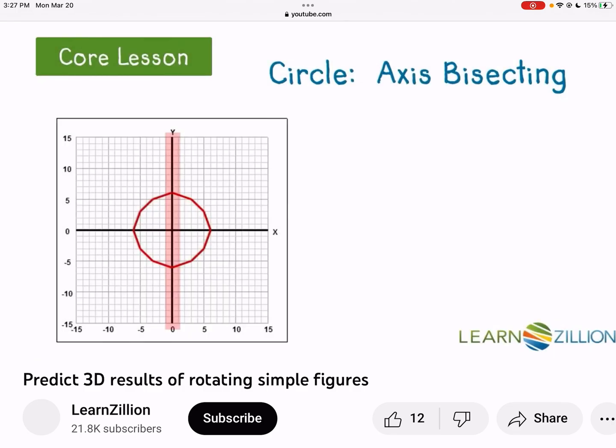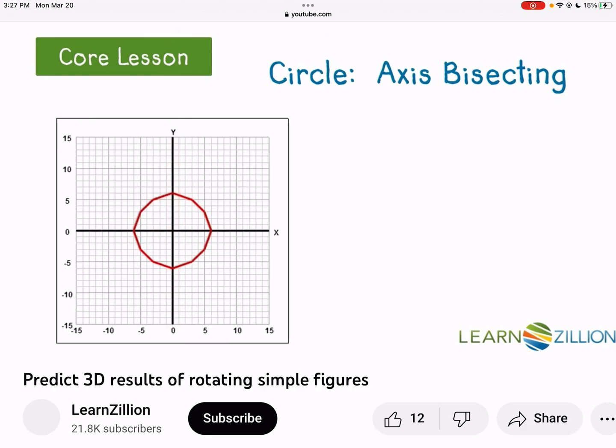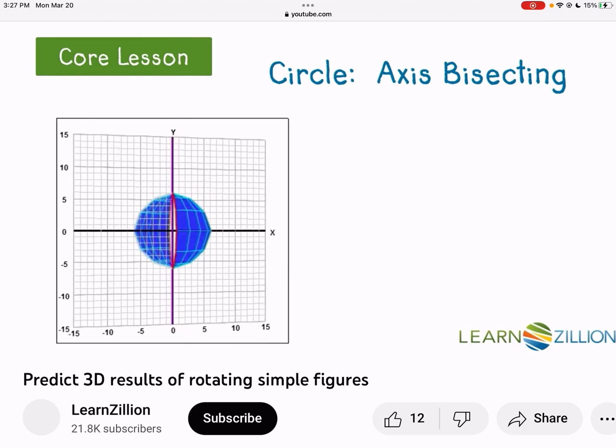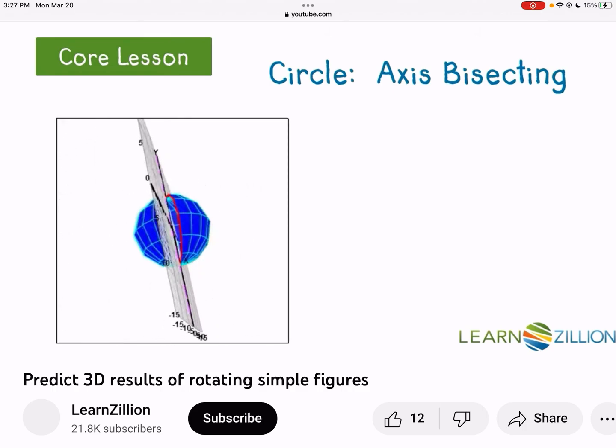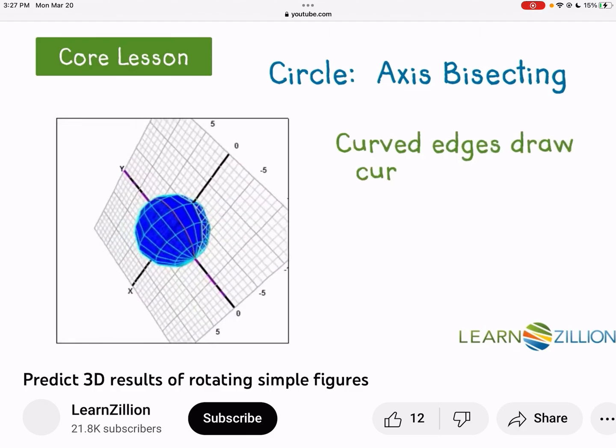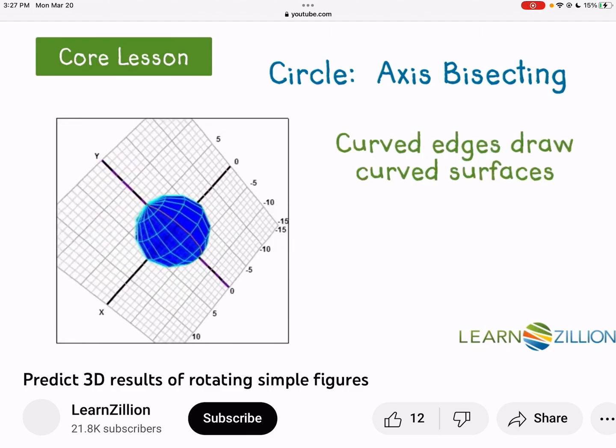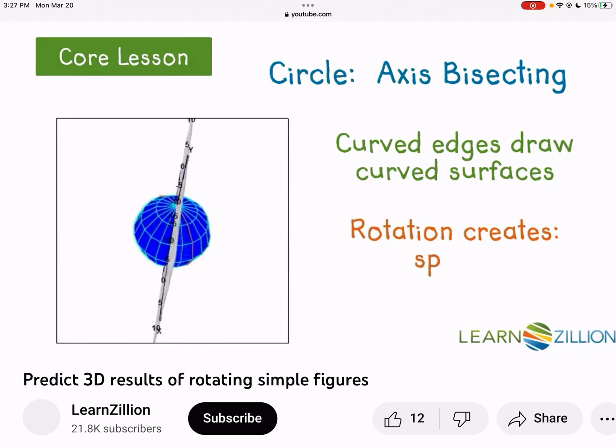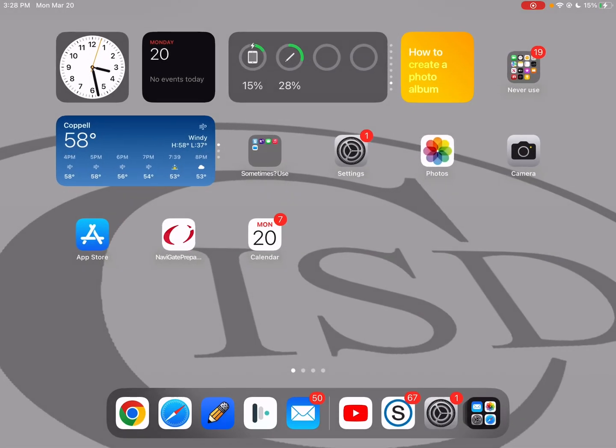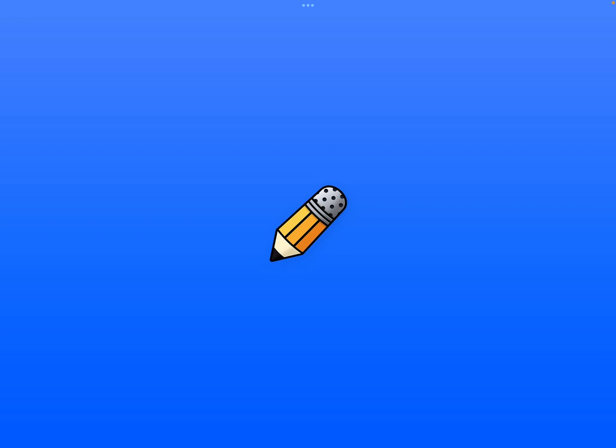That's supposed to be a circle. The guy can't really make a circle. Spinning around the y-axis. And you make yourself a sphere. So understanding what a rotation is. So we have an axis of rotation. We're spinning around the axis.